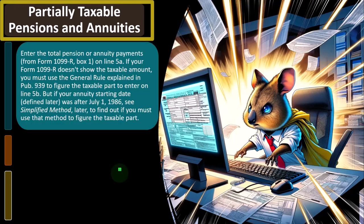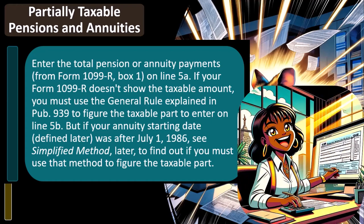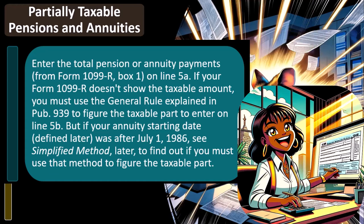For partially taxable pensions and annuities, enter the total pension or annuity payments from Form 1099-R box 1 on line 5A. If your Form 1099-R doesn't show the taxable amount, you must use the general rule explained in Publication 939 to figure the taxable part to enter on line 5B. Hopefully the work has been done by the issuer of the 1099 — typically the financial institution — to break out the taxable and non-taxable amounts. If they don't, you can research Publication 939.